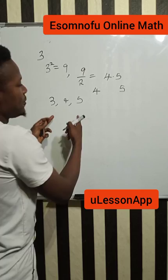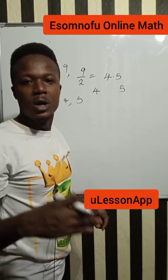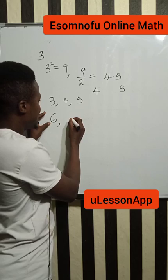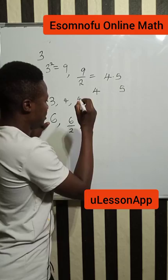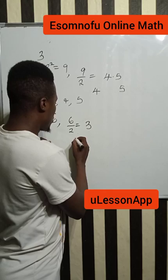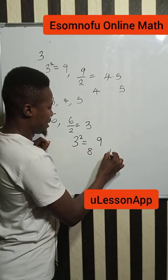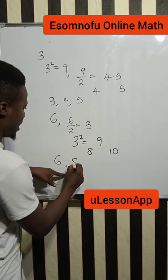You can use even numbers too. Let's say I want to get a Pythagorean triple using the even number 6. What you have to do is divide 6 by 2 first — you are getting 3. So 6 divided by 2 gives us 3. Now square the 3. 3 squared is 9. This 9 lies between 8 and 10. Hence, if you pick 6, the next two numbers will be 8 and 10. That will make it a Pythagorean triple: 6, 8, 10.